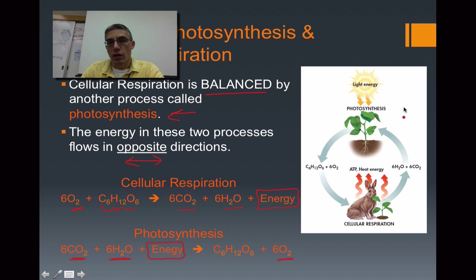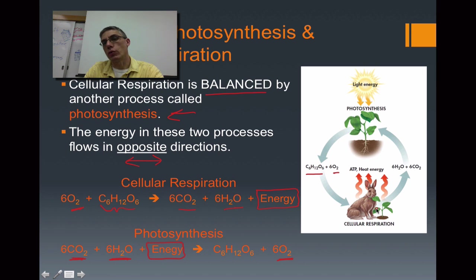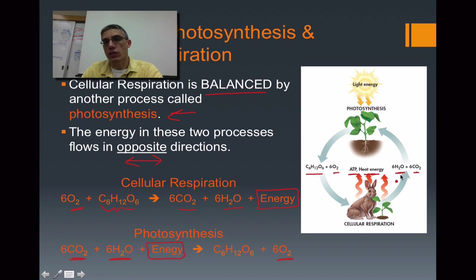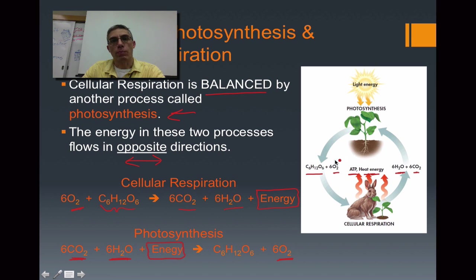On the right-hand side there's a diagram depicting these two processes together. Light energy at the top powers the plant to produce glucose and oxygen. The animal takes in that oxygen and consumes the glucose, using its mitochondria and cell respiration to produce chemical energy called ATP, along with a little heat energy as a byproduct. The CO2 and water produced by the animal are then taken up by the plant, and the cycle repeats itself. Both photosynthesis and cell respiration form a balanced system — a reciprocal relationship between autotrophs like plants and heterotrophs like ourselves.